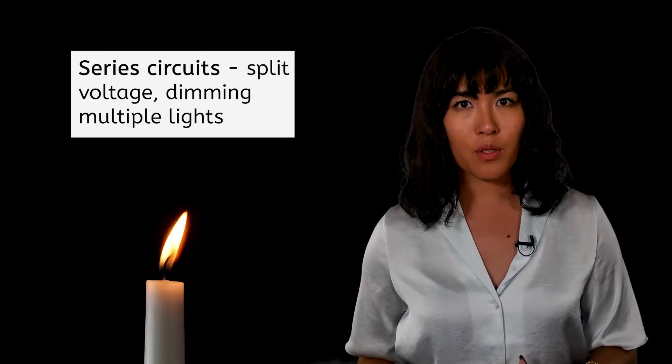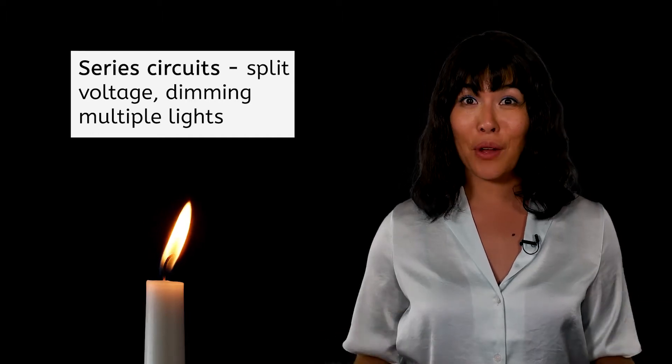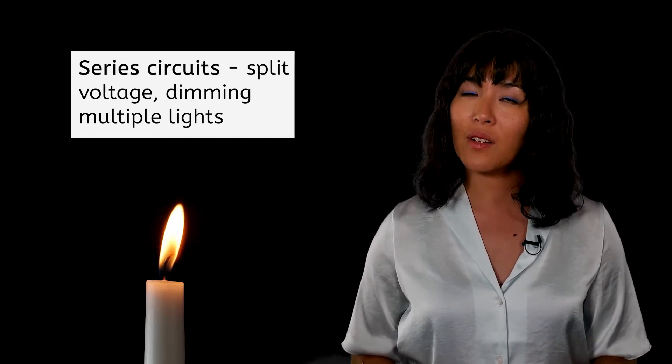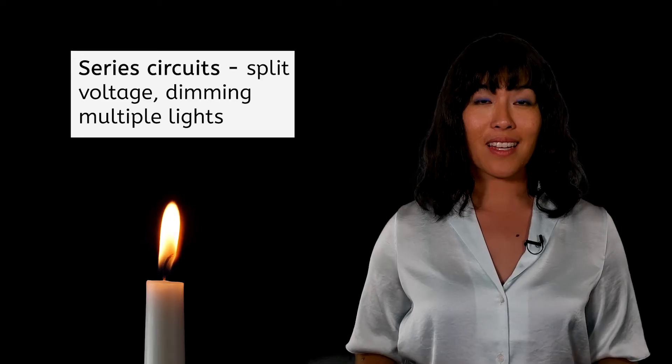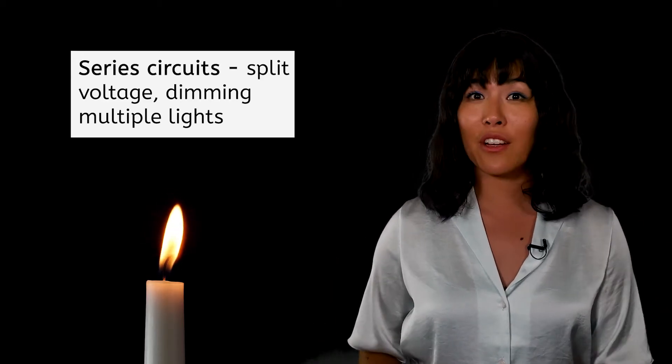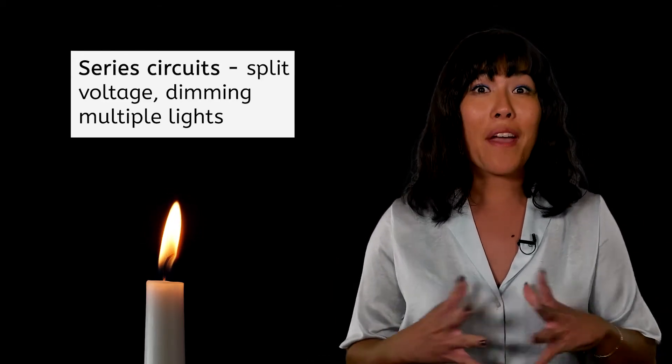When my electricity is working, I have a lot of lights in here. If they were wired in a series and having to split the voltage among them, they would all be very dim. Fortunately, there is another way to wire circuits that allows the original voltage of the energy source to be given to every bulb, even when the circuit has many bulbs in it.